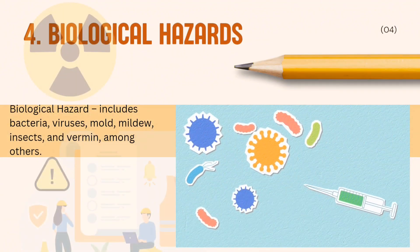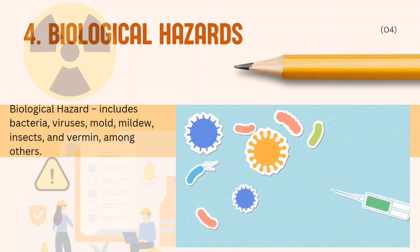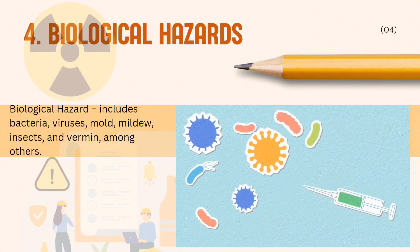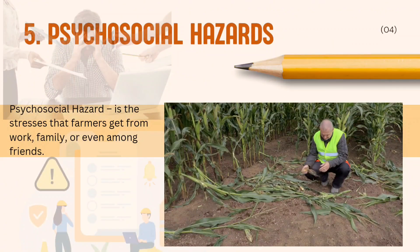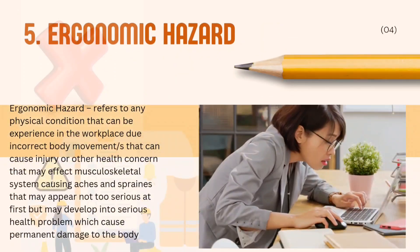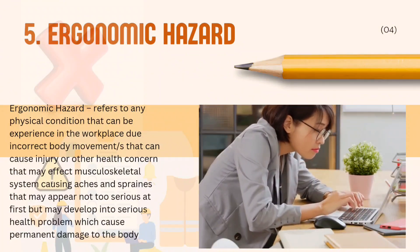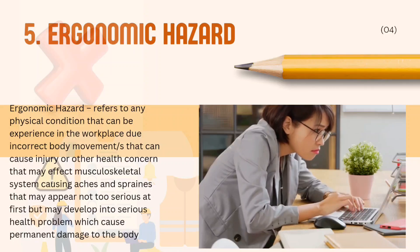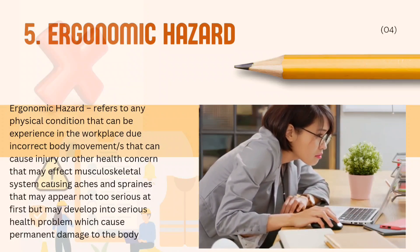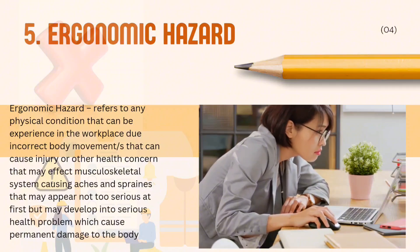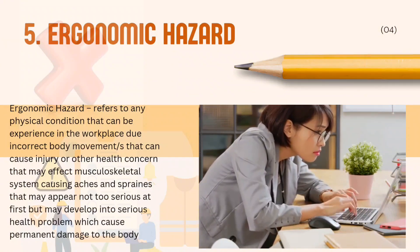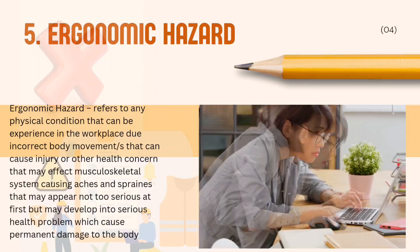4. Biological hazard. Biological hazard includes bacteria, viruses, mold, mildew, insects, and vermin, among others. Then, psychosocial hazard is the stress that farmers get from work, family, or even among friends. Next is ergonomic hazard, which refers to any physical condition experienced in the workplace due to incorrect body movements that can cause injury or health concerns affecting the musculoskeletal system, causing aches and sprains that may appear not too serious at first but may develop into serious health problems which can cause permanent damage to the body.